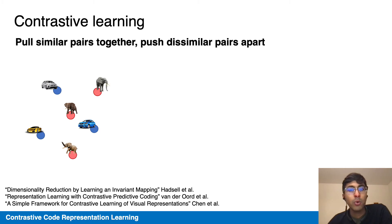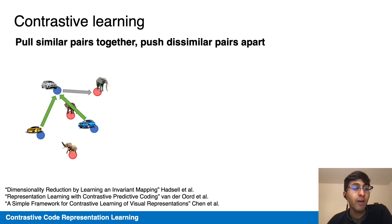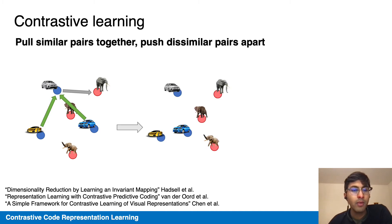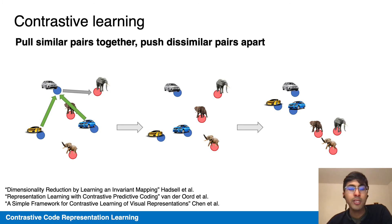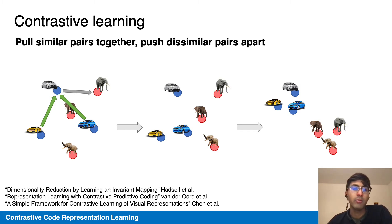The contrastive learning framework is quite general and has been proposed before, both for text, images, and other modalities. The basic principle is to identify pairs of similar data points and attract them in representation space, while minimizing similarity with pairs that are dissimilar. Contrastive learning over the course of pre-training results in clustering according to these choices of pairs. The selection of pairs is quite important for shaping the final representation. Our selection of functionally equivalent programs as positive pairs and functionally different programs as negatives lets us cluster together functionally equivalent programs.